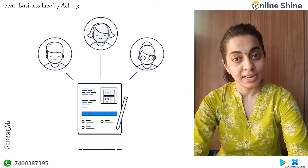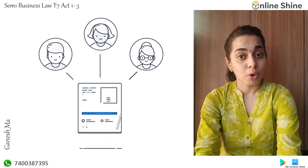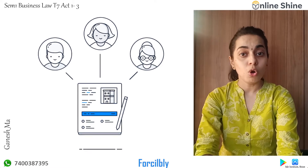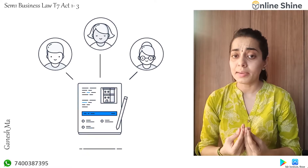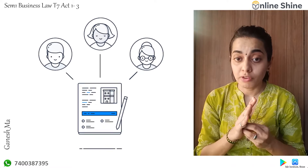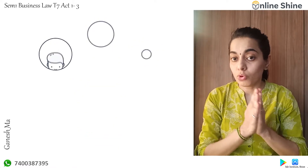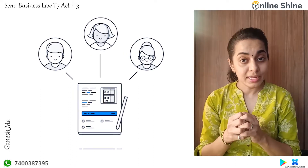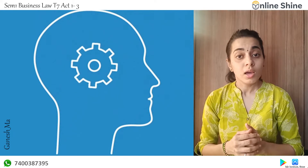Shah Rukh Khan signed the papers and gave away the property. Later he realized that was his property and his intention was never there — he was made to do it forcibly. Can the law protect him? Yes. The law says if anyone has obtained your consent through physical force, it is not free consent and you can claim for the same. It is called coercion. Any contract obtained through physical force is a voidable contract.